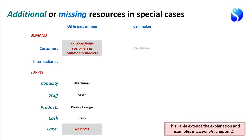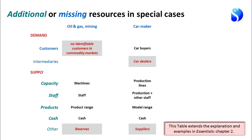In the case of a car maker, this brings in the need for an additional resource in the form of intermediaries. The car maker doesn't sell directly to the customer — they sell to car dealers who sell on to consumers, and those car dealers are a critical resource. Car makers also have a critical resource in the form of suppliers who provide the components and materials they need.